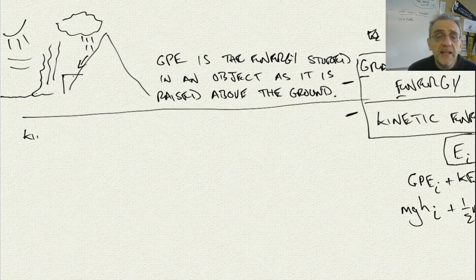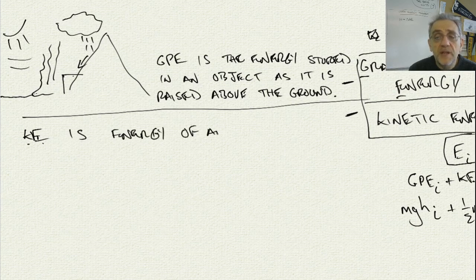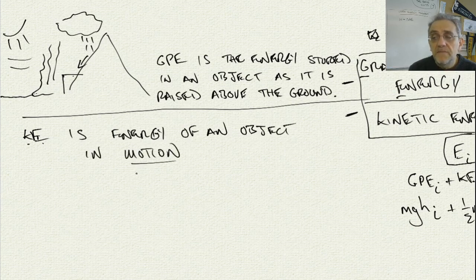On the other hand, kinetic energy KE, that is simply the energy of an object in motion. So kinetic means motion. Whenever something is moving it has energy. It takes energy to move something.